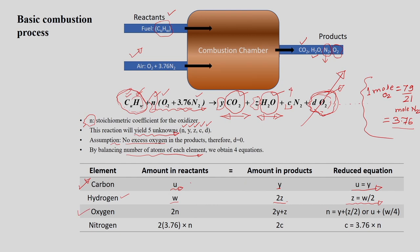For oxygen: since we are considering air, it is accompanied by 3.76 moles of nitrogen per mole of O2. N represents the total moles of air required. So oxygen in the reactant is 2N. In the product, we have 2Y (from CO2) plus Z (from H2O), giving the equation 2N = 2Y + Z.